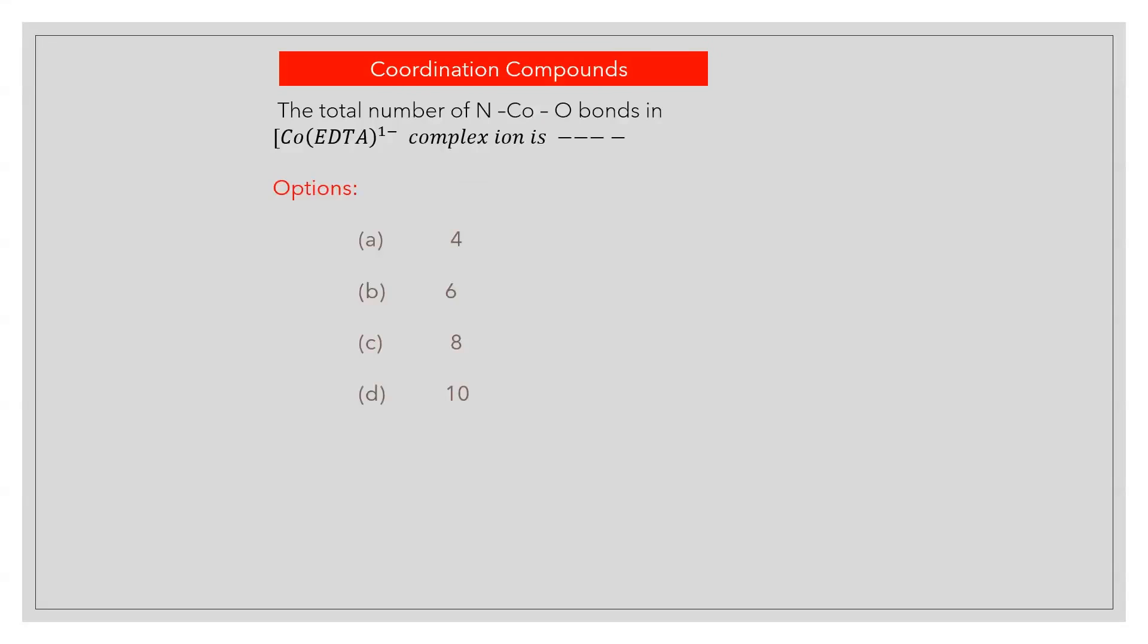The total number of N-COO bonds in COADT minus complex ion is? Answer C: 8.